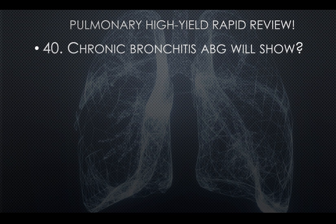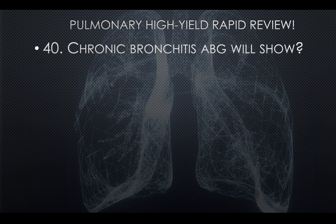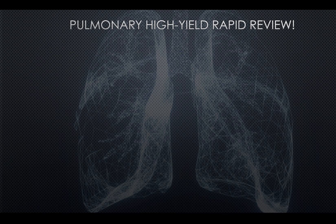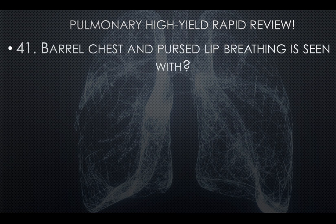Question forty: Chronic bronchitis ABG will show respiratory acidosis. Acidosis for chronic bronchitis, alkalosis for emphysema. Question forty-one: Barrel chest and pursed lip breathing is seen with emphysema and COPD.